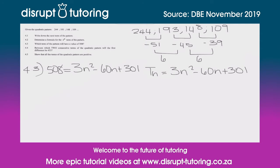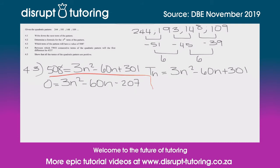We need to notice firstly that we've got an n squared, which means we're probably going to have two answers. The first thing we do is clear the left-hand side to get 0, leaving us with 3n squared minus 60n, and then 301 minus 508 on the right gives us minus 207. Since I've got large numbers here that are tricky to factorize, I'm going to divide everything by 3, which is the highest common factor.